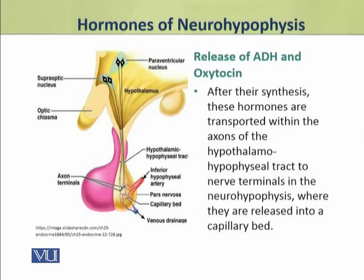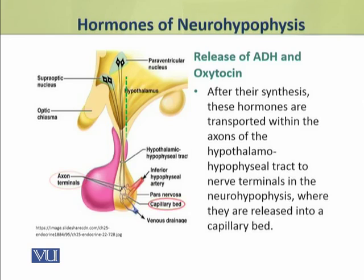After their synthesis, these hormones are transported within the axons of the hypothalamo-hypophysial tract. They are transported by the nerve terminals to the posterior pituitary, where they are released into the capillary bed that contains the blood.